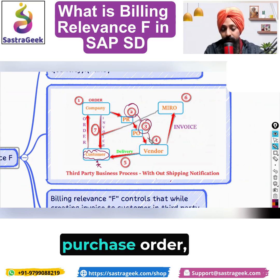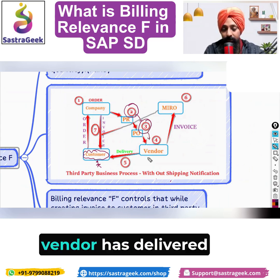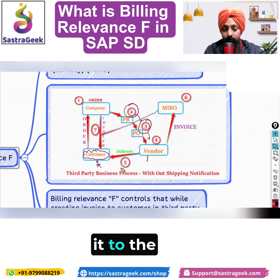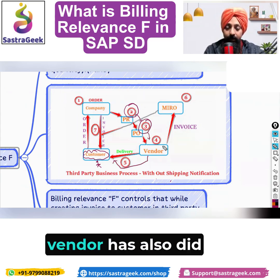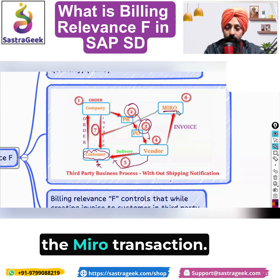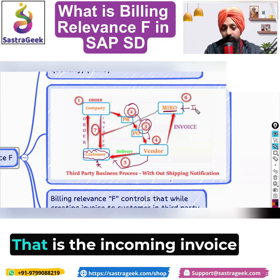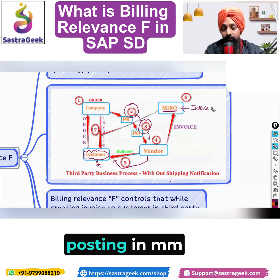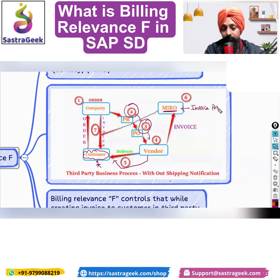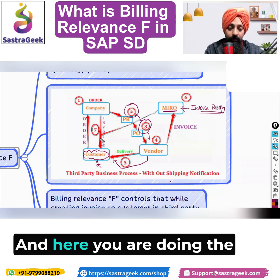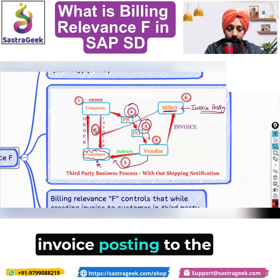Against the purchase order, the vendor has delivered directly to the customer. The vendor has also done the MIRO transaction — MIRO is invoice posting, that is the incoming invoice posting in MM. And here, you are doing the invoice posting to the customer.